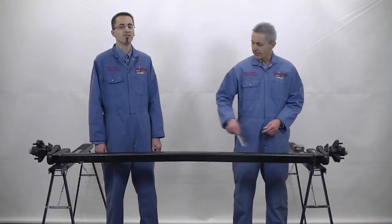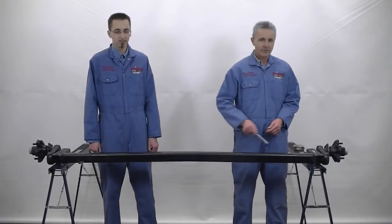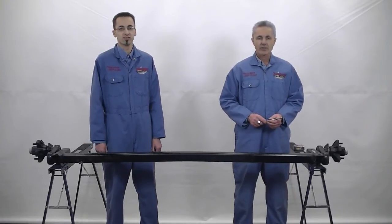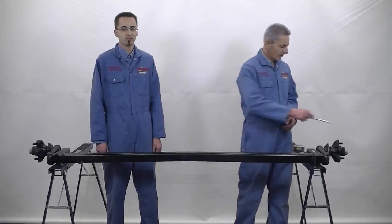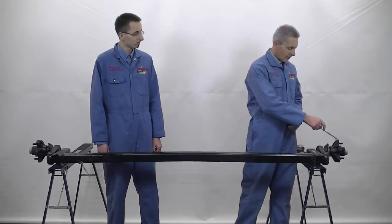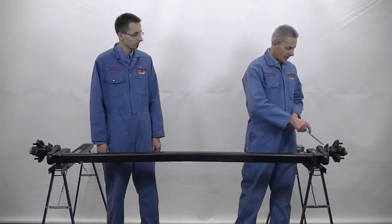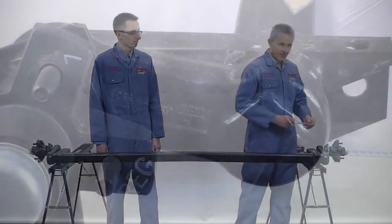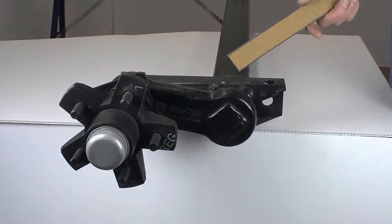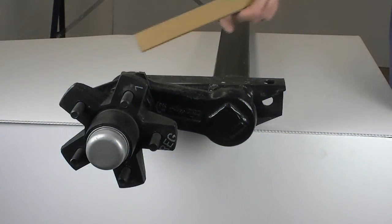Here we have a 3,500 pound torsion axle. We're going to need some basic information from you before you can order this axle. We're going to need to know the bolt pattern. We're going to need to know the start angle of the suspension arm. Here we have a 3,500 pound capacity rubber torsion axle. This is the suspension arm.